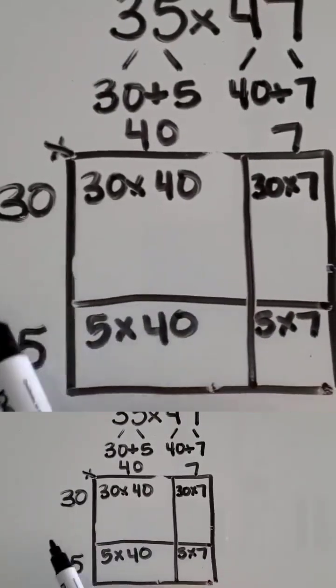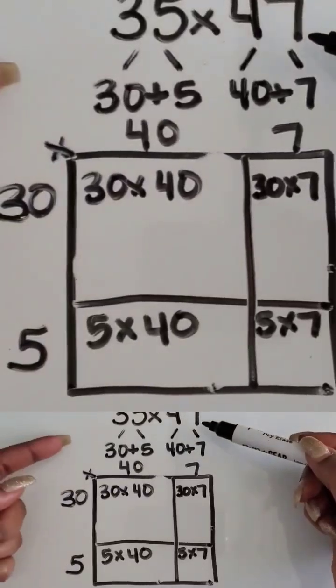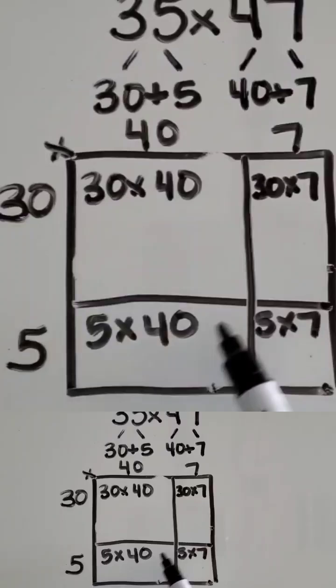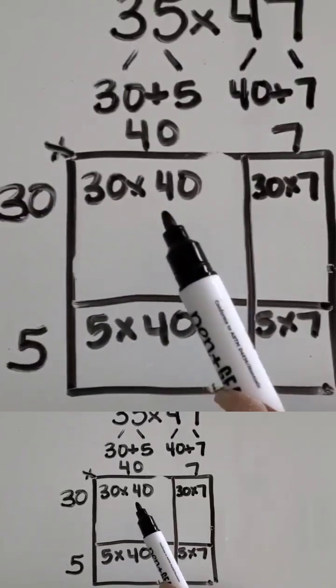As students get to the point where they're multiplying a two-digit by another two-digit number, a lot of them will be comfortable with just writing the products and not having to write the expression, but it's whatever students are comfortable with.